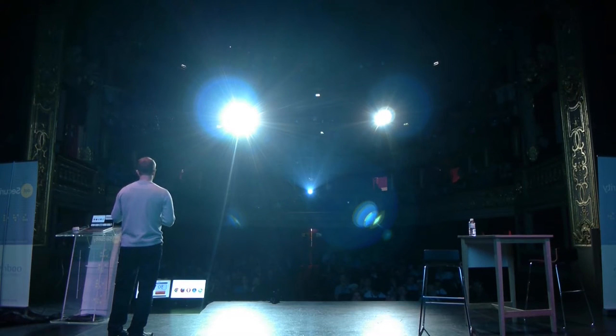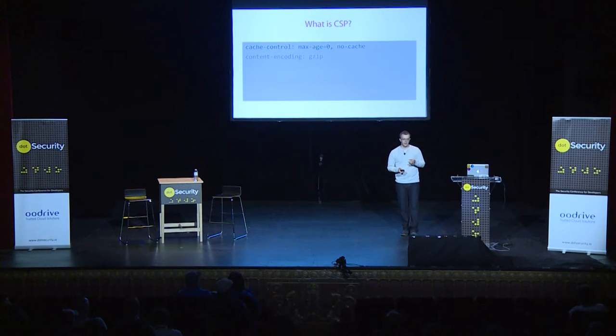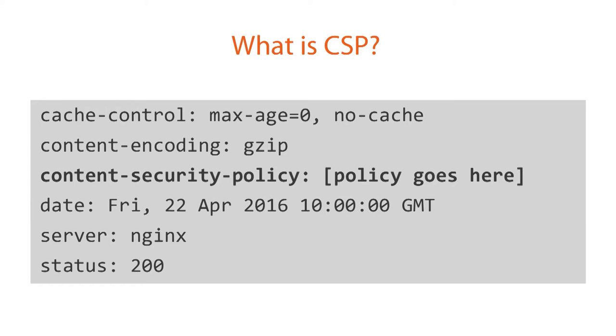Content security policy itself was created to prevent content injection attacks. It was designed to stop people being able to get content into our pages that shouldn't be there. We do this by returning the content security policy header and giving the browser a policy to enforce on that particular page. The policy is enforced against the page on a per-page basis — it doesn't have a lifetime, it's not stored or cached.